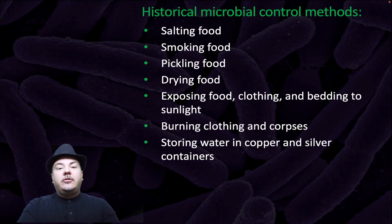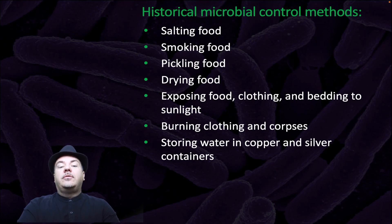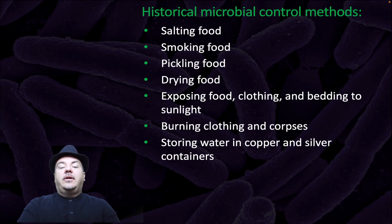Throughout history, humans have been trying to control microbial growth, sometimes without knowing they were doing it, through methods such as salting food, smoking food, pickling food, drying food, exposing food, clothing, and bedding to sunlight, burning clothing and corpses, and storing water in copper and silver containers.